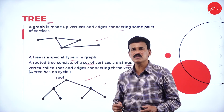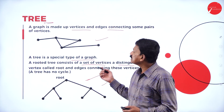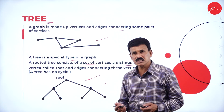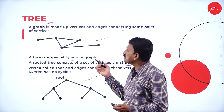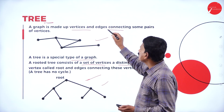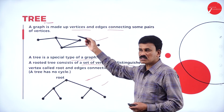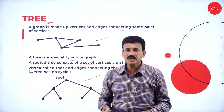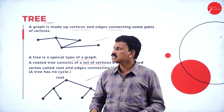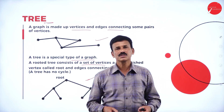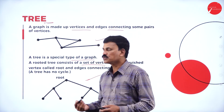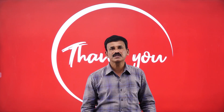That is a small concept regarding a tree and a root. In the examination they may ask: define a tree. A graph made up of vertices and edges connecting some pairs of vertices is called a tree. Or you can write: a graph without cycles is called a tree. That is all regarding today's session. Let us meet with a different concept in the next session. Thank you very much.